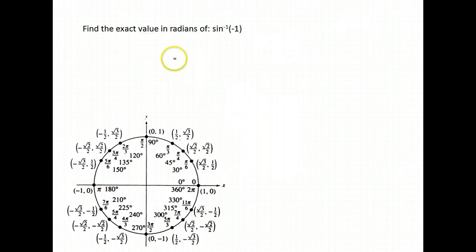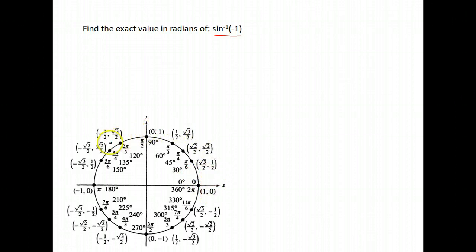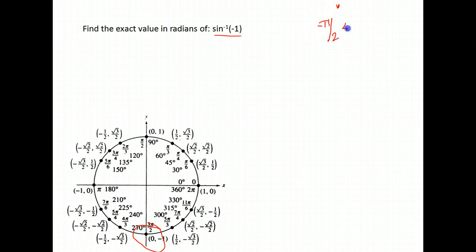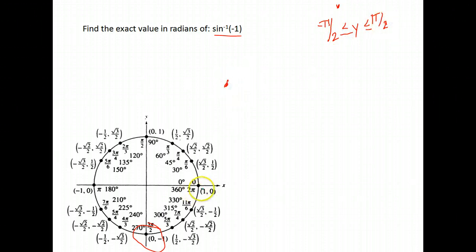Find the exact value in radians of the inverse sine of negative 1. Sine is our y value, so we look for where y equals negative 1, which is at the point with angle 3pi over 2 going positive. However, our answers for sine must be between negative pi over 2 and pi over 2, including those endpoints. So we write this answer as negative pi over 2.